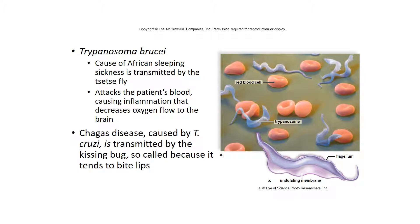Trypanosoma brucei is the cause of African sleeping sickness, transmitted by the Tsetse fly. This type of flagellate attacks the patient's blood. You get bitten by a Tsetse fly and it's transmitted into your body. Trypanosoma brucei causes inflammation that decreases oxygen flow to the brain, so people feel very tired and lethargic — hence the name.